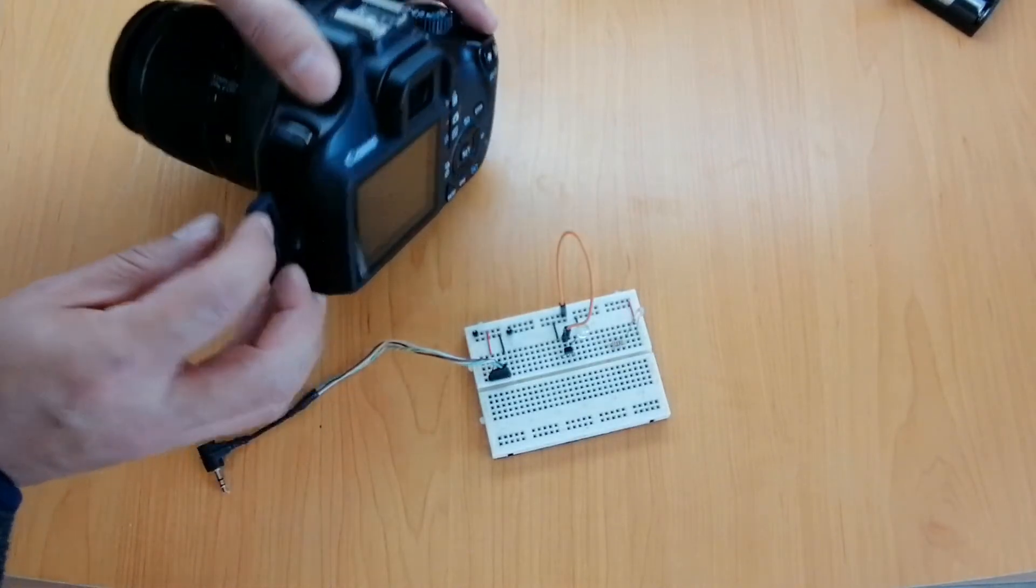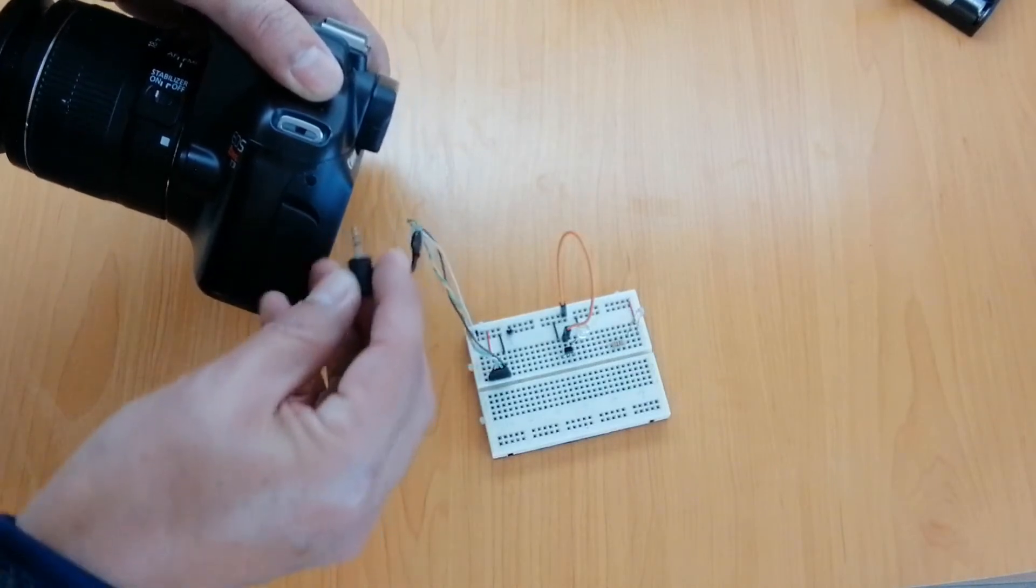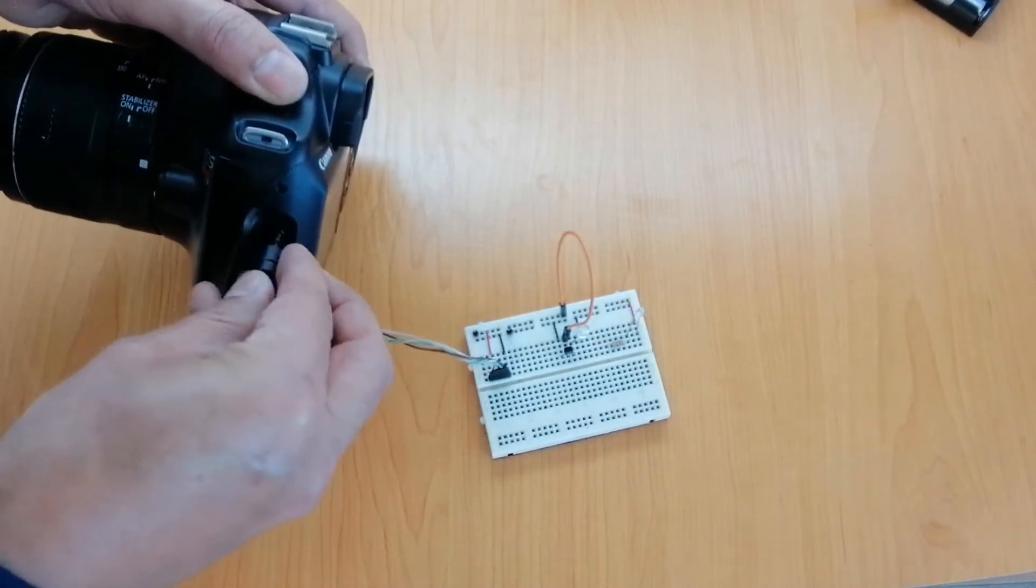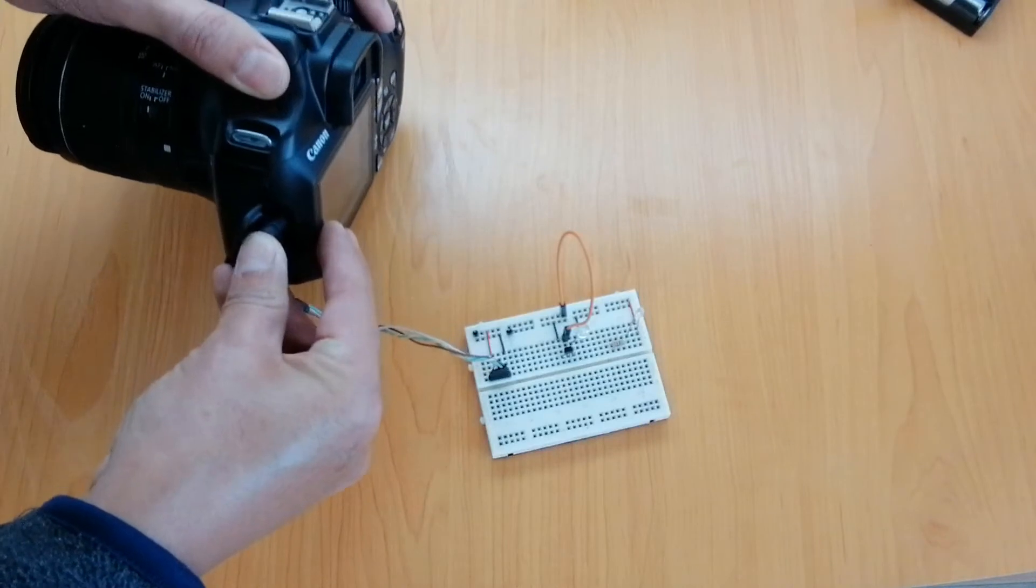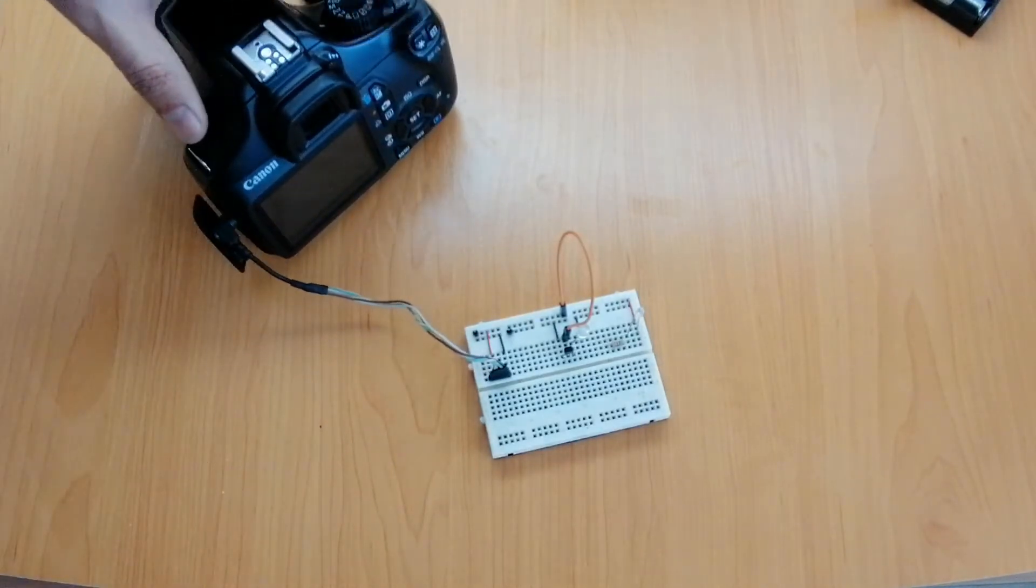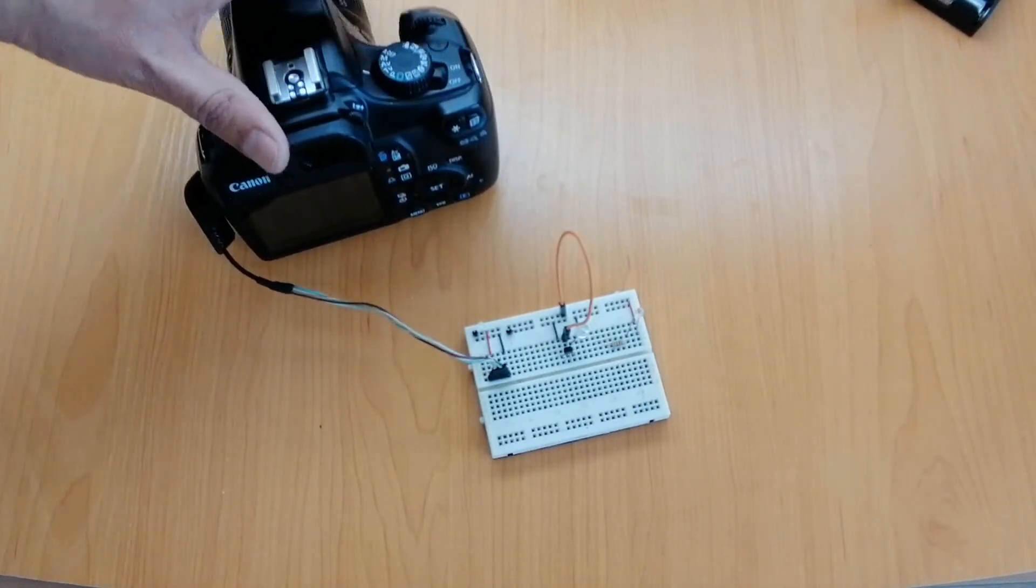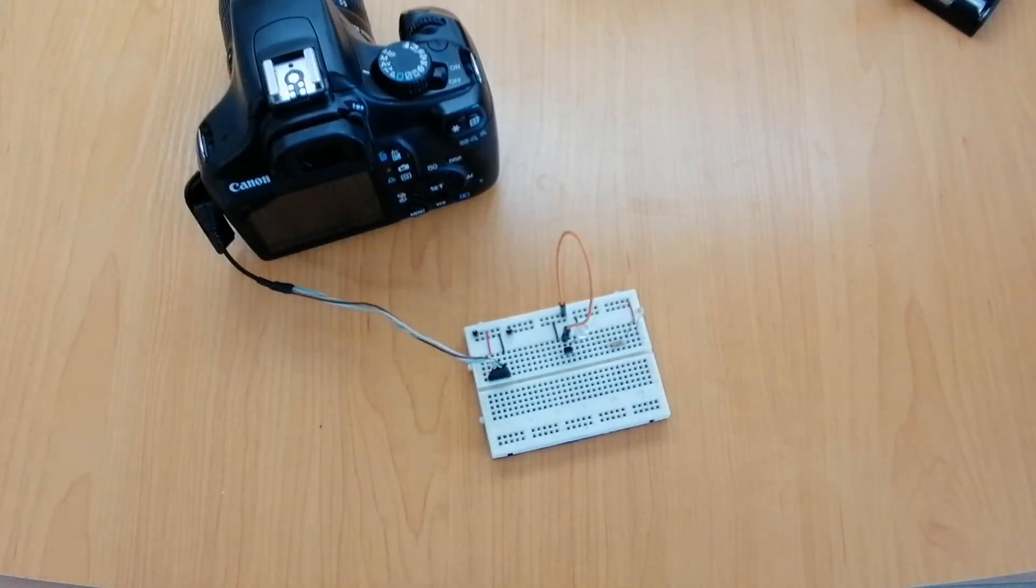Let's connect the jack in the shutter port. And point the camera to a nice direction. Turn on the camera.